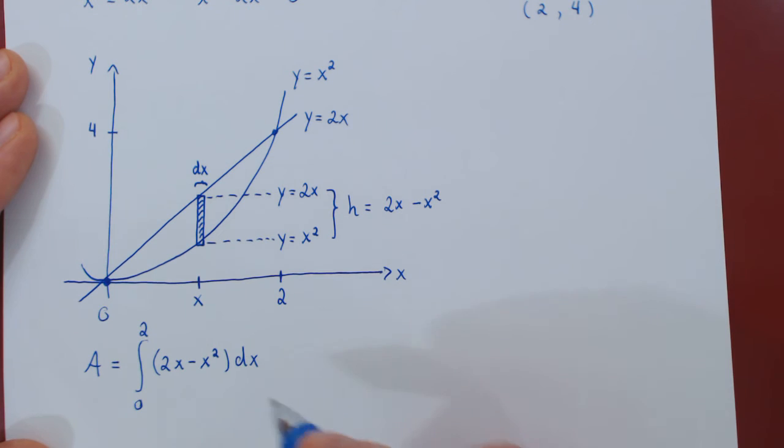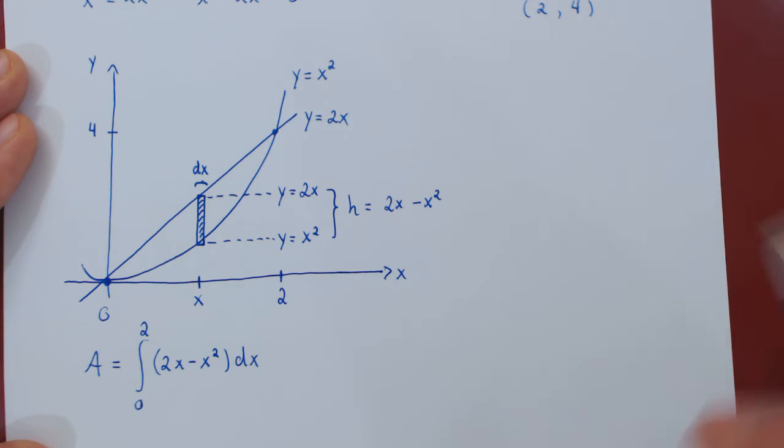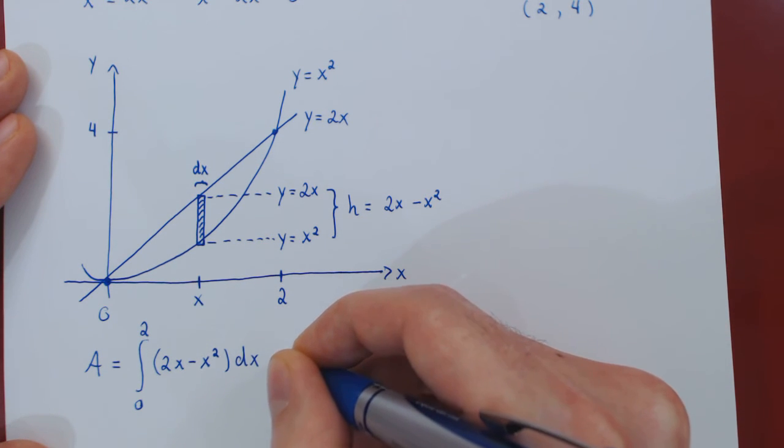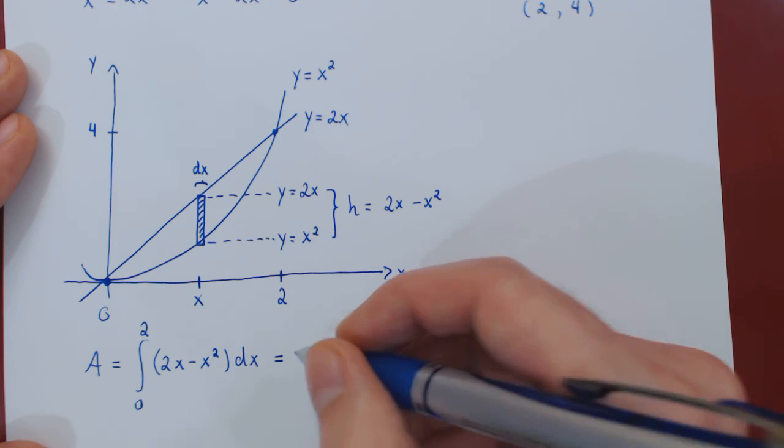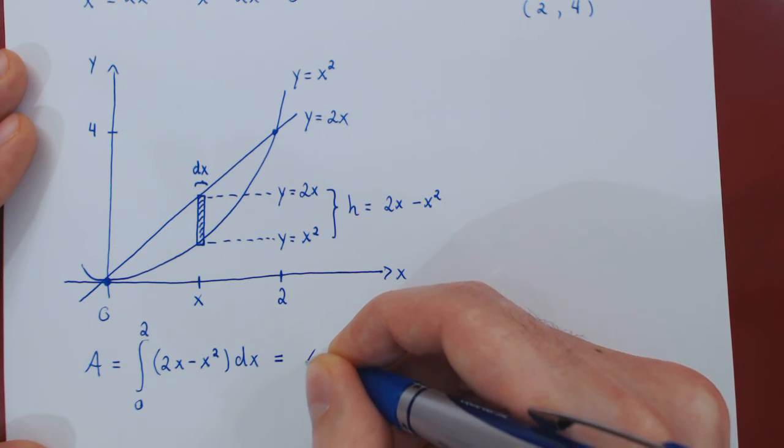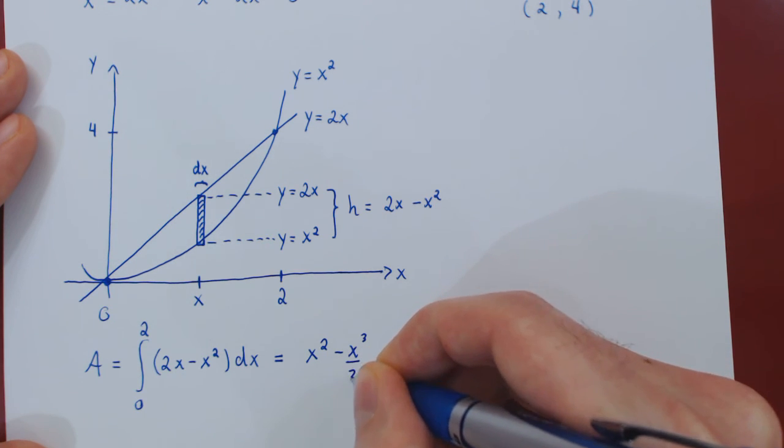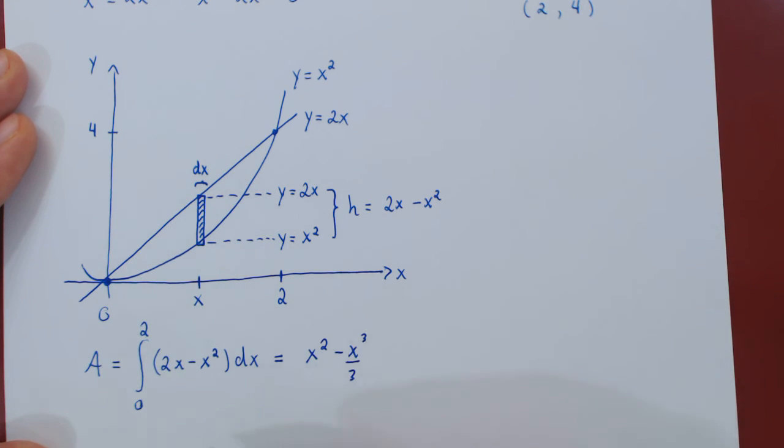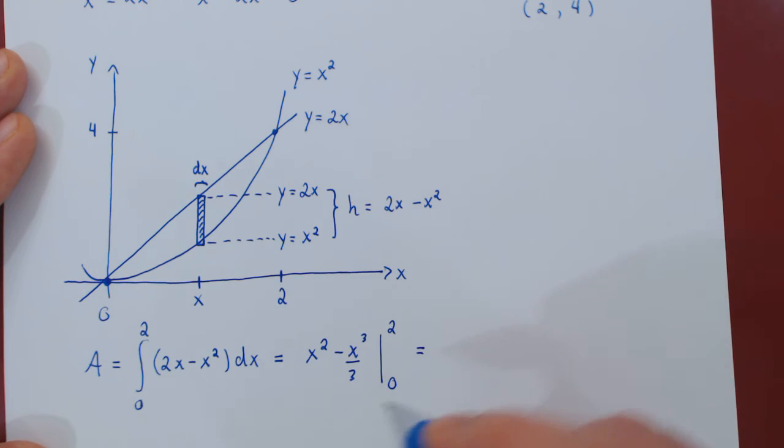And now, of course, we have two options. We need to evaluate this definite integral either using Riemann sums or the fundamental theorem of calculus. We will, of course, go with the second option as it is much more efficient. So first, we find an antiderivative. 2x minus x squared power rule, x squared minus x cubed over 3. And as always, if you differentiate this function, you will obtain 2x minus x squared. And we evaluate from 0 to 2.